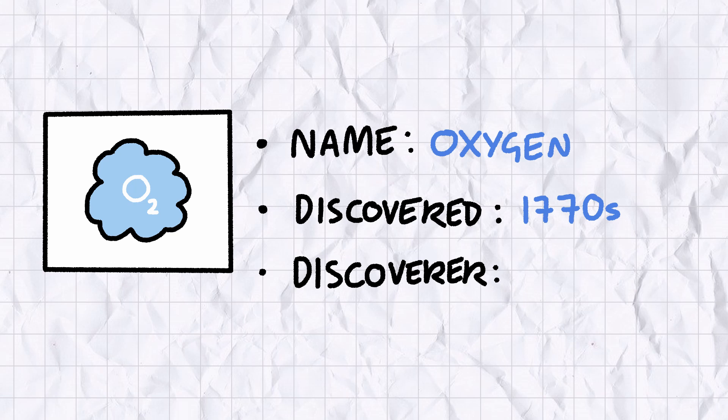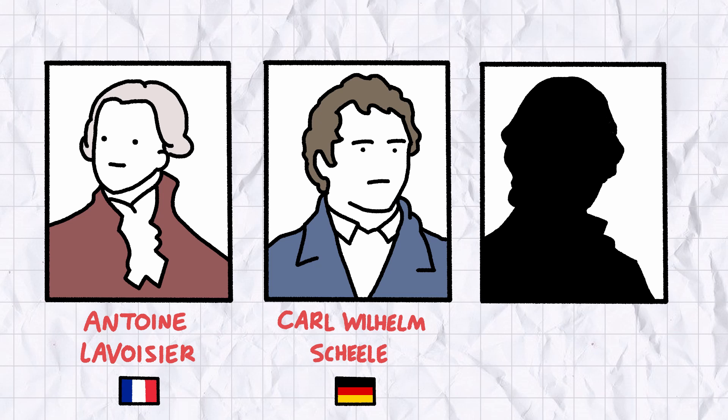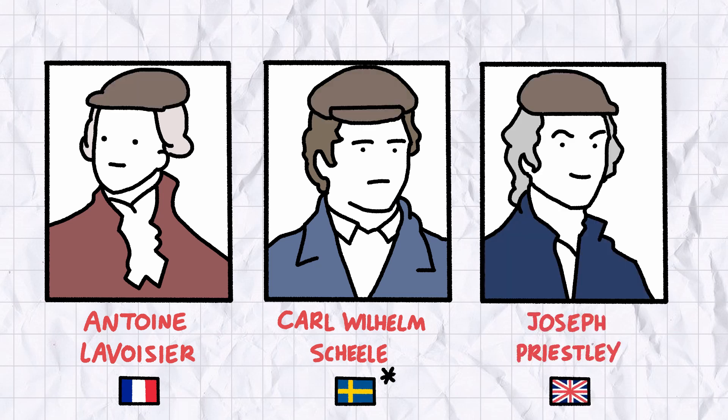Oxygen was discovered in the 1770s, but scientific historians have yet to make up their mind as to who was the first. At various points in history, oxygen's discovery has been attributed to three men: Antoine Lavoisier from Paris, France; Carl Wilhelm Scheele from Stralsund, Germany, or Stralsund, Swedish Pomerania as it was back then; and Joseph Priestley from Birstall in God's green country, Yorkshire.